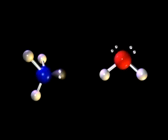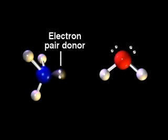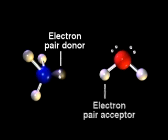In the Lewis acid-base theory, the emphasis is on the electron pair. Ammonia is a base because it acts as an electron pair donor toward the proton. The proton is an acid because it acts as an electron pair acceptor.